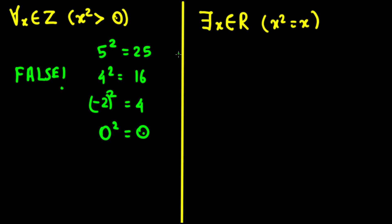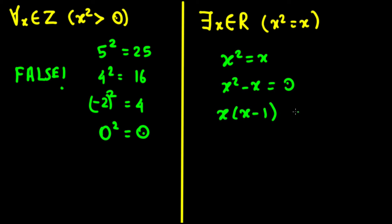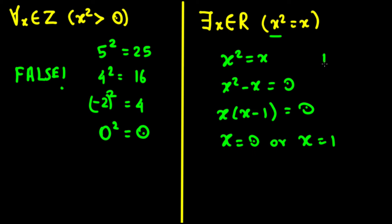Next: there exists x belonging to the real numbers such that x squared equals x. Rearranging: x squared minus x equals 0, so x times (x minus 1) equals 0, giving x equals 0 or x equals 1. When x equals 0, 0 squared equals 0; when x equals 1, 1 squared equals 1. Both cases satisfy the condition, so this statement is true.